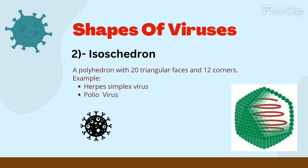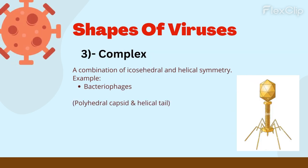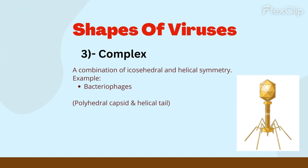The second shape is the icosahedron — a polyhedron with 20 triangular faces and 12 corners — such as the herpes simplex virus. Some viruses are complex-shaped, being combinations of helix and icosahedron. For example, bacteriophages contain a polyhedral capsid and a helical tail.